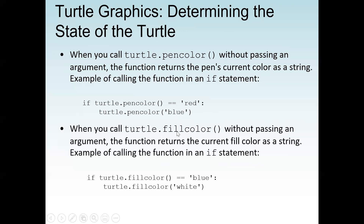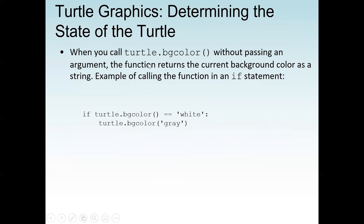When you call turtle.fillcolor() without passing an argument, it returns the current fill color as a string. For example: if turtle.fillcolor() equals 'blue', we change it to white with turtle.fillcolor('white'). Similarly, turtle.bgcolor() without an argument returns the current background color as a string. If the background color is white, we change it to gray: turtle.bgcolor('gray').